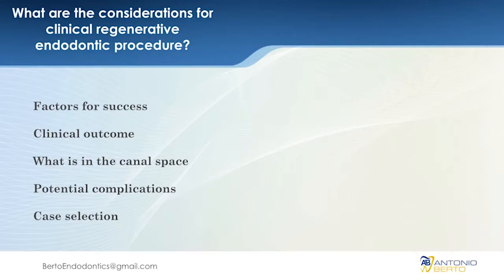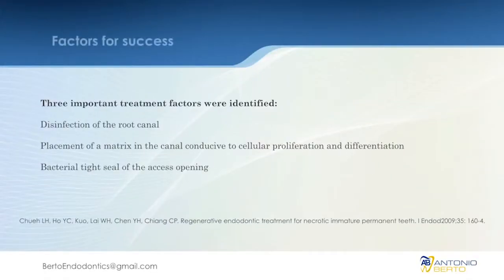Now let's talk about some questions that may arise. What are the factors for success? There are three very important factors. First, disinfecting the root canal — we've stressed the importance of chemicals to disinfect, and we'll barely be using endodontic files. Second, we're going to use a matrix to allow the proliferation and differentiation of the pulp tissue — that comes from our blood clot. And finally, most importantly, we want to seal the coronal access as well as possible, and that's where the MTA and composite come in.